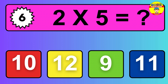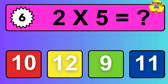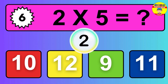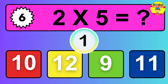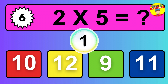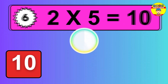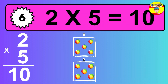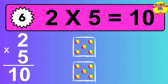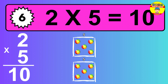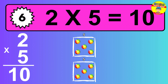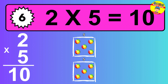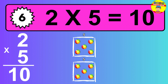Question 6. 2 times 5 equals what? The answer is 10. To calculate, we have 2 groups with 5 balls each one. So how many balls do we have? Ten balls.